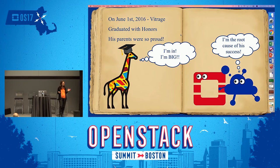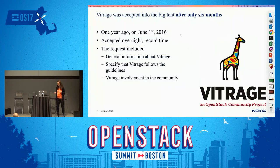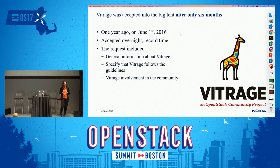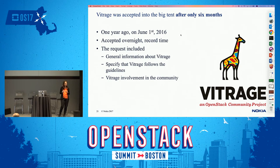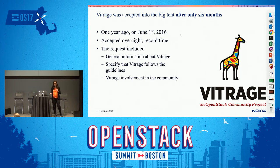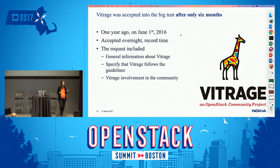Just six and a half months after Vitrage was started, it was accepted to the big tent — a major achievement that happened very quickly. I submitted a request and for about a week or two got no response, but then at a technical committee meeting they accepted us with no arguments. When I wrote the request, I described the project and had a checklist of all the OpenStack guidelines we were following. One major thing was describing community interest in Vitrage — writing a project is not enough; you need to show it belongs to OpenStack and that the community cares.